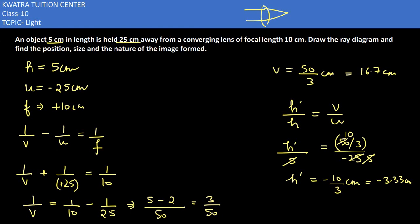Now the negative sign indicates that image is inverted. Image is inverted, real and what type - diminished. Because size of image is less in comparison to size of object. Object was 5, this is 3.33. So it would be real, inverted and diminished.